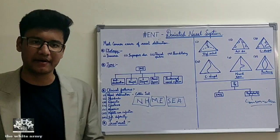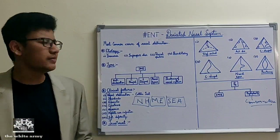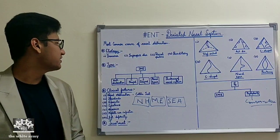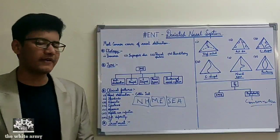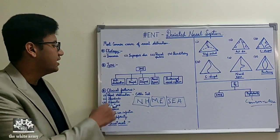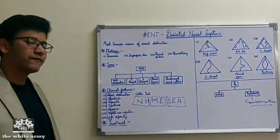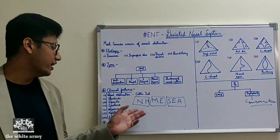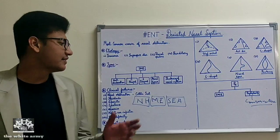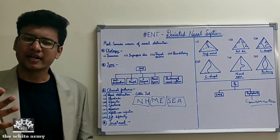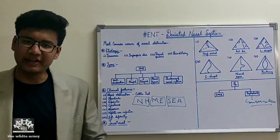In conclusion, deviated nasal septum is the main cause of nasal obstruction. Etiology includes trauma, improper development, racial factors, and hereditary factors. Types include anterior dislocation, C-shape, S-shape, nasal spur, and thickening. Clinical features are remembered using the mnemonic 'Naziruddin Hospital is located in the Middle East.' Treatment is SMR and septoplasty, with septoplasty having almost completely replaced SMR today.